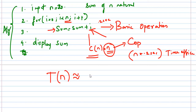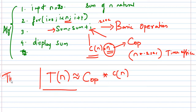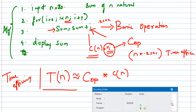So time efficiency is calculated based on input size: time efficiency is approximately equal to basic operation time into C(n), because n times this basic operation is going to get executed. This is how you calculate the time efficiency. Next is space efficiency — how much extra space the algorithm takes in terms of n. We will continue with space efficiency in the next video. Thank you students, thanks for watching my video, please subscribe to my channel.